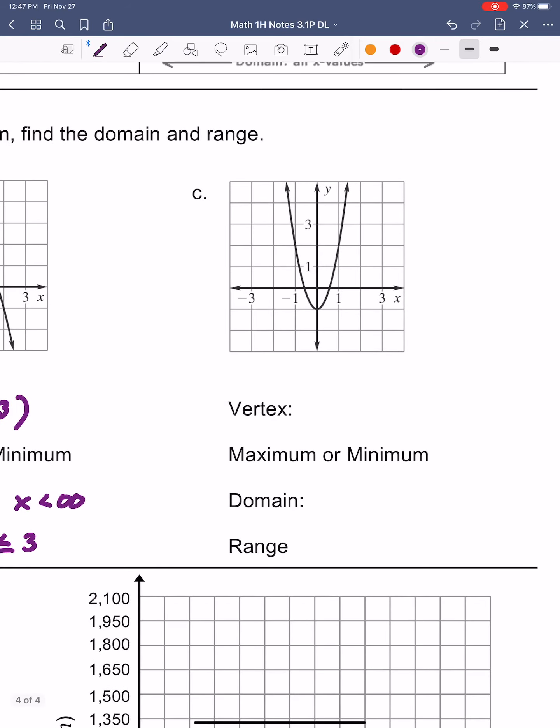And then we'll go here to letter C. The vertex for this problem is at negative 1, at the bottom, which makes it a minimum. We've got all real numbers for the domain, from positive infinity down to negative infinity. And the range for this one is going to be y is greater than or equal to negative 1, because it's going up from negative 1.